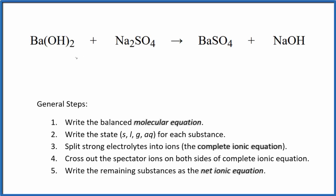To write the balanced net ionic equation for barium hydroxide plus sodium sulfate, we first need to balance the molecular equation. To do that, all we need to do is put a 2 in front of the sodium hydroxide. So the molecular equation is balanced.